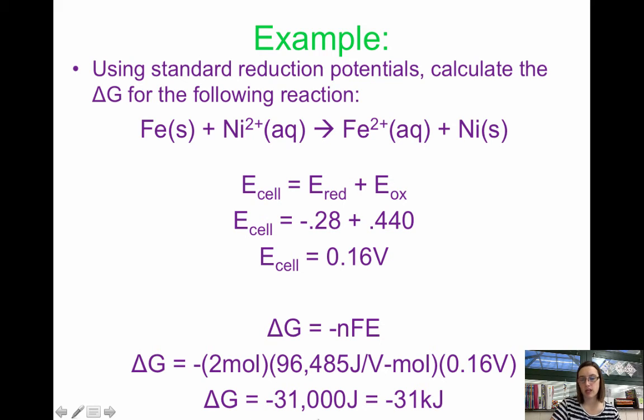Delta G is normally given in kilojoules, so I converted it to kilojoules. Delta G is negative 31 kilojoules. Based on cell potential and delta G, we can say this reaction is spontaneous.